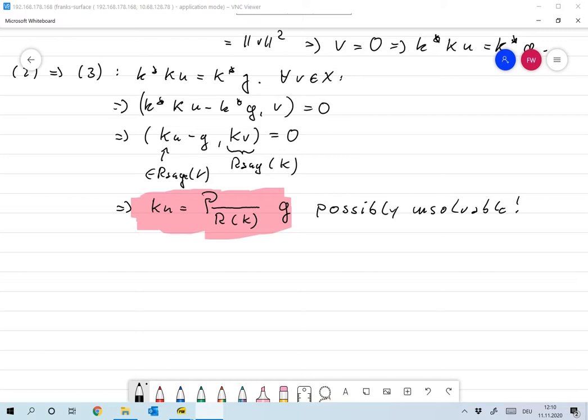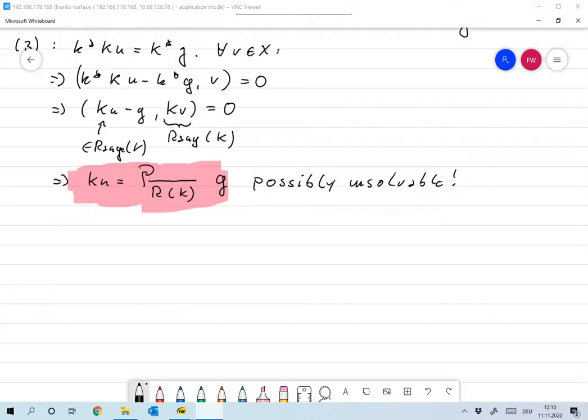So generally this will be unsolvable. Now we can already say what is the requirement for the equation ku equals g to have a least square solution. Well, the projection onto the closure of the range must actually be in the range. So what does this mean? We need to require that g is in the range plus the range perp.